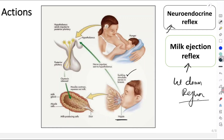For this reflex, the stimulus is suckling of the baby on the breast, specifically on and around the nipple and the areola. That stimulates the receptors there, and this information via the nerves is carried to the hypothalamus. The hypothalamus then pushes whatever oxytocin is present into the posterior pituitary, which then releases the oxytocin.